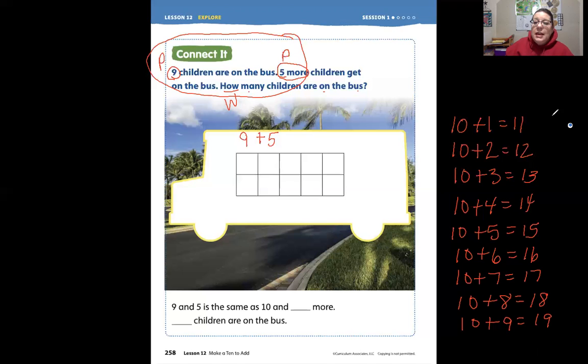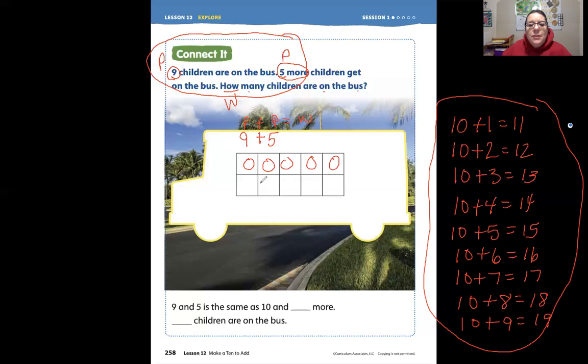Okay. So if we have this concept down, making a 10 to add is so much easier. So if we have 9 plus 5, let's draw that first addend. Let's draw that first part. A part plus a part equals the whole, right? 1, 2, 3, 4, 5. New line. 6, 7, 8, 9.